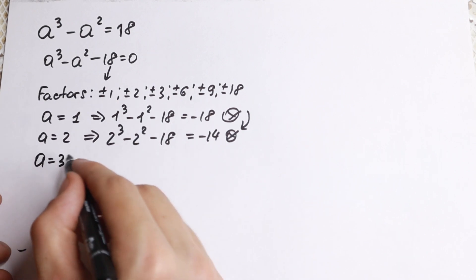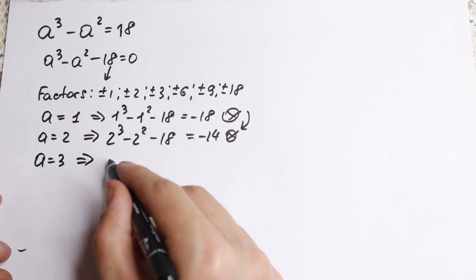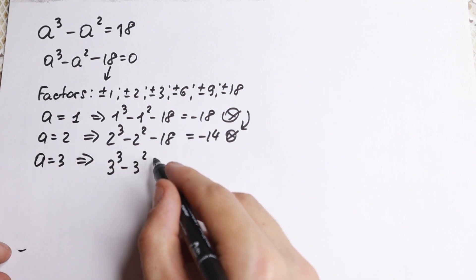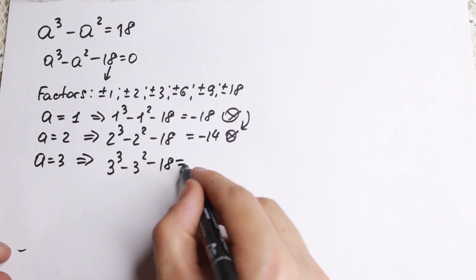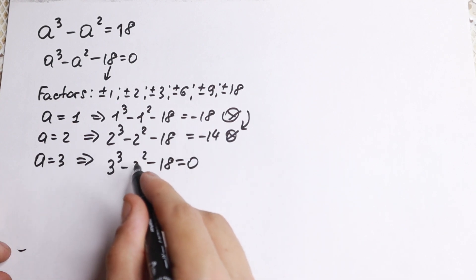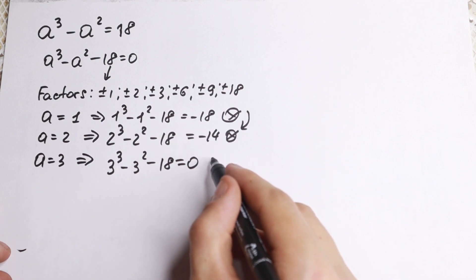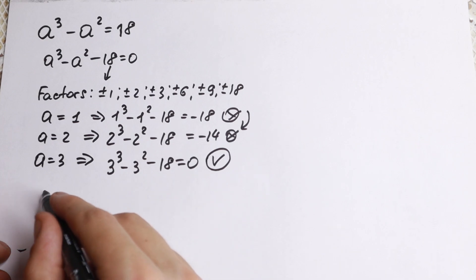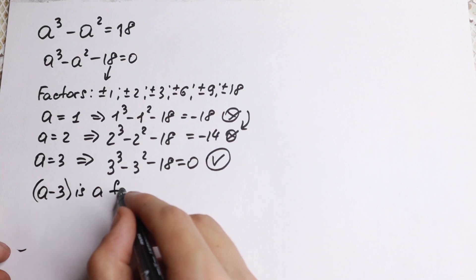We have -18, -14, and we're getting closer and closer. And then, if you plug in a = 3, we will have 3³ - 3² - 18 = 0. And finally, 27 - 9 - 18 = 0. And of course, we find our first factor. So (a - 3) is a factor.